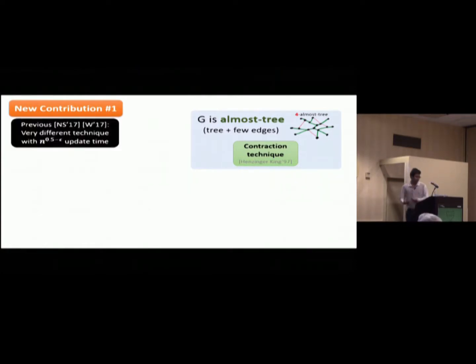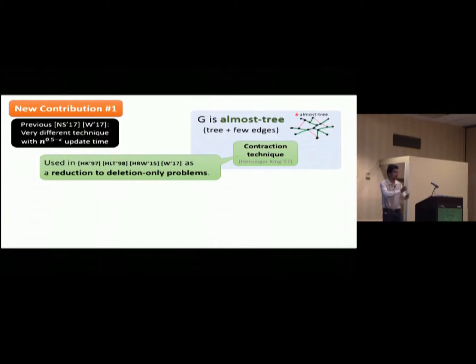So, in the previous work, both of our algorithms, we used a totally different technique. And it takes just slightly less than square root n. In this work, we used the technique, which is called contraction technique. We actually try to do something and we actually discover that the technique is there. And we can just use it. And this technique is actually used before, for many papers. But it is used as a reduction for deletion only problem. That is, you have your problem that you may need to insert or delete edges. And you reduce it to the case when you have only deletion. So this is the technique for that.